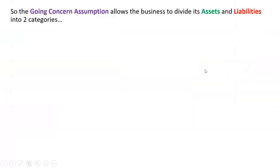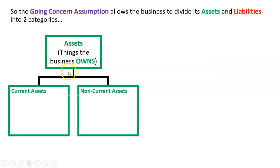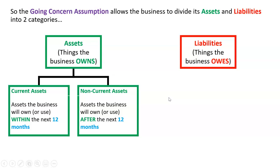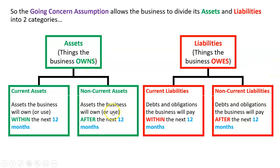Fundamentally, what those examples demonstrate is that the going concern assumption allows us to divide our assets and liabilities into two categories. We've got assets — the things we own. Because of the going concern assumption, we can say there are current assets, the ones we'll own or use within the next 12 months, and non-current assets, the ones we'll own or use after the next 12 months. Likewise, the going concern assumption allows us to say with liabilities — the things the business owes — there are current ones due within the next 12 months, and ones due after the next 12 months, even if we're not certain the business will be around. Without it, we'd have to lump everything in the current section for both assets and liabilities, and that doesn't give us good information.